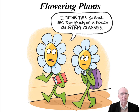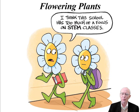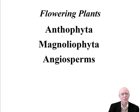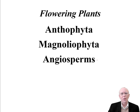Let's begin our work with flowering plants. This is the part of the class where we fix the problem with stem classes, because we won't be talking about stems at all — well, not very much. The flowering plants have a number of names for this group. The one we're using, and the one most commonly in use, is the angiosperms.